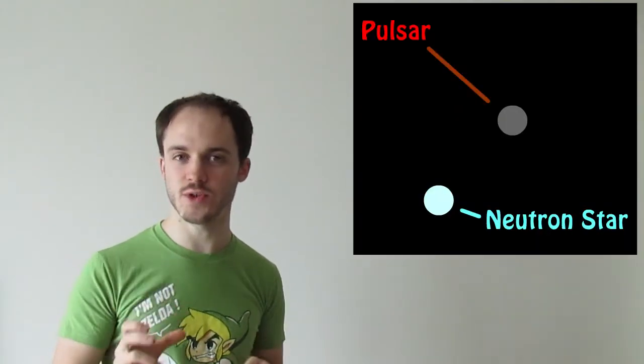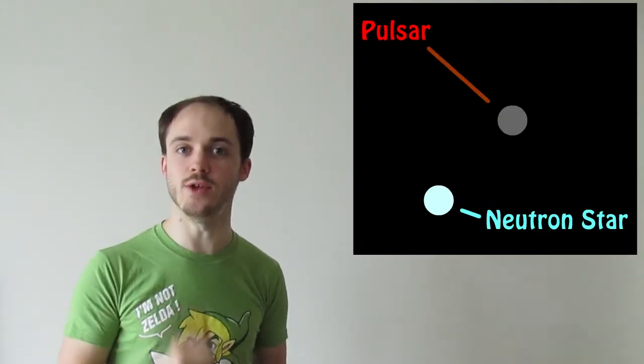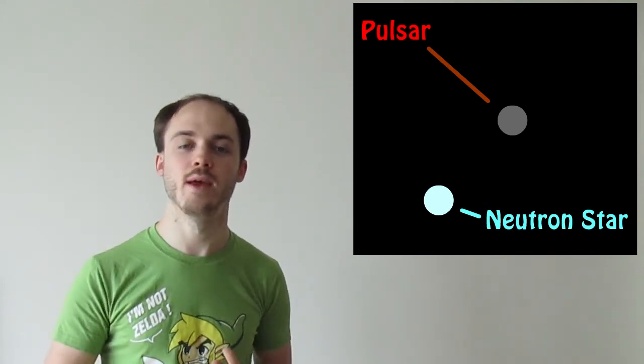So we know that gravitational waves are incredibly important, and we know that Einstein's theory of relativity predicts they do exist. But what evidence do we have that they exist other than this theory? Well, one of the biggest ones is something called the Hulse-Taylor binary. And what this is, is it's two stars orbiting around each other, a neutron star and a pulsar star. Now, a pulsar is just a star that releases lots of pulses of energy at regular intervals.